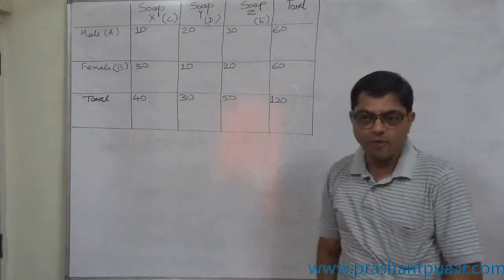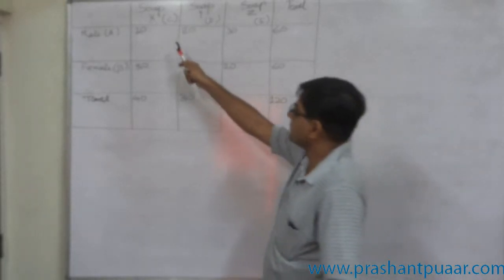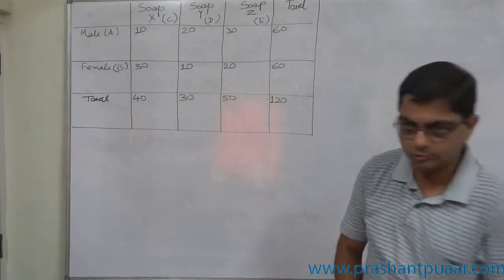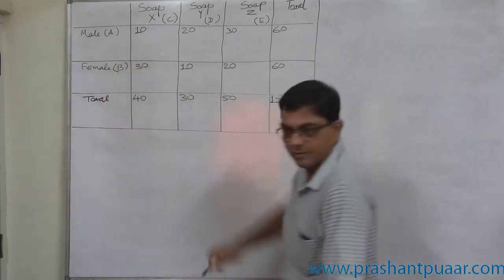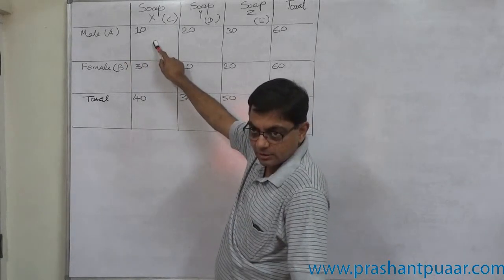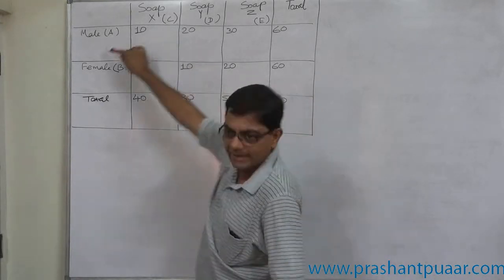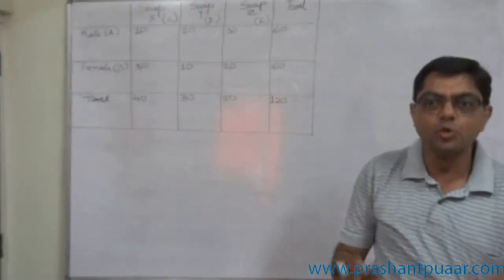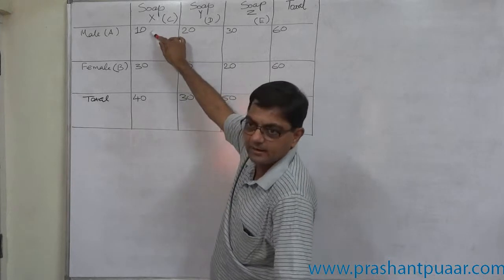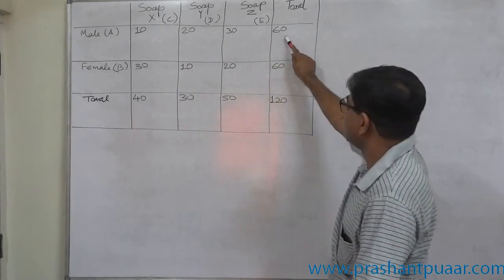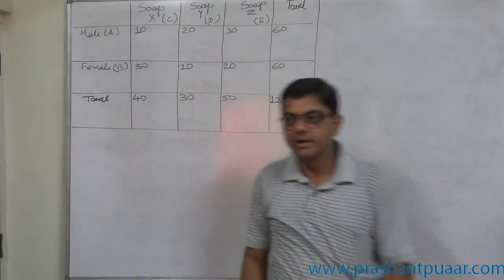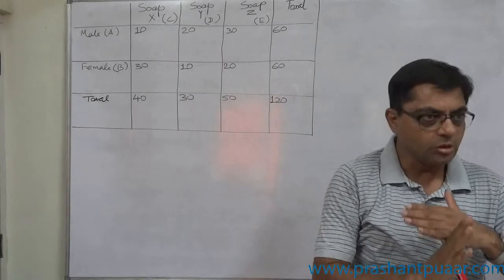The information is in tabular form regarding the usage of three types of soap: SOP X, SOP Y, and SOP Z — three brands of SOPs. There are two types of users: male users and female users. Any number in the table has two-dimensional meaning; for example, 10 can mean male users of SOP X, or it can mean that among 40 users of SOP X, 10 are male, or out of 60 males, 10 use SOP X. All numbers have two references.